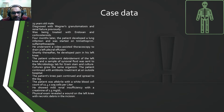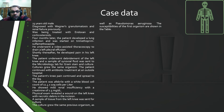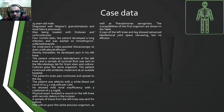Physical examination revealed a wound on the left knee with necrotic debris in the incision. A sample of tissue from the left knee was sent for culture. The culture grew the same previous organism as well as Pseudomonas aeruginosa. The susceptibilities of the first organism are shown in the table. X-ray of the left knee and leg showed advanced tibio-femoral joint narrowing but no effusion.